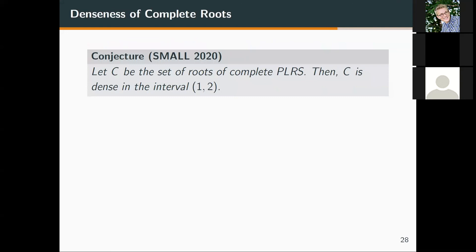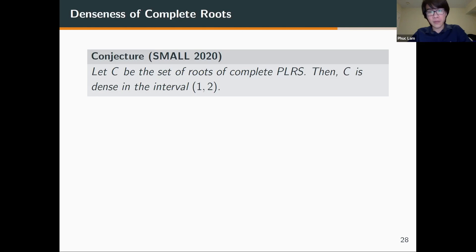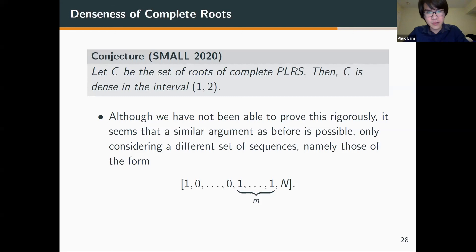We conjecture a similar result for complete PLRS: if C is the set of principal roots of complete PLRS, then C is also dense in (1, 2). Although we have not been able to show this rigorously, we suspect a similar argument is possible, for example considering sequences of the form [1, zeros, 1, n].